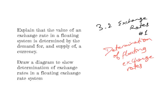Hello everyone. This will be the first video from unit 3.2 in the International Economics IB economic syllabus. This whole series will be about exchange rates. In this first video I'm going to talk about the determination of floating exchange rates. I'm going to explain that the value of an exchange rate in a floating system is determined by the demand for and the supply of a currency, and I'm going to draw a diagram to show the determination of exchange rates in a floating exchange rate system.